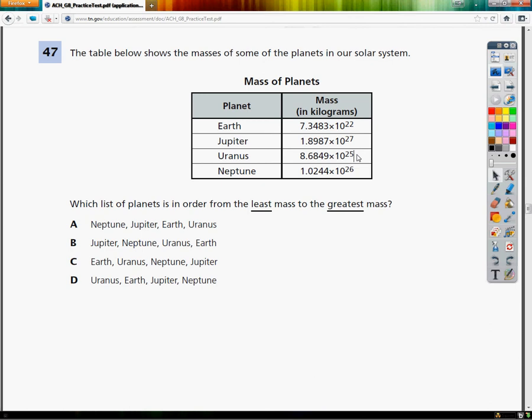Now the easy thing to do, which would be wrong by the way, is to start looking at the numbers and say that 1.0244 is much smaller than 8.68, so that must be the smallest one. That is absolutely not the way you go about doing this.